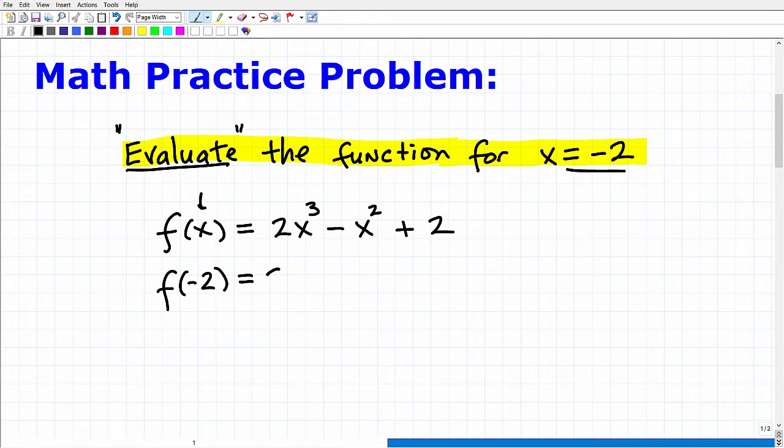So it would look like this: 2, parentheses, negative 2 cubed, minus parentheses, I got another x here, negative 2 squared plus 2. So you're going to be very careful. Let's go ahead and double check, make sure we did this right, 2, negative 2 cubed. Always want to double check your work in mathematics. That looks good. So I plugged in negative 2 everywhere there was an x.